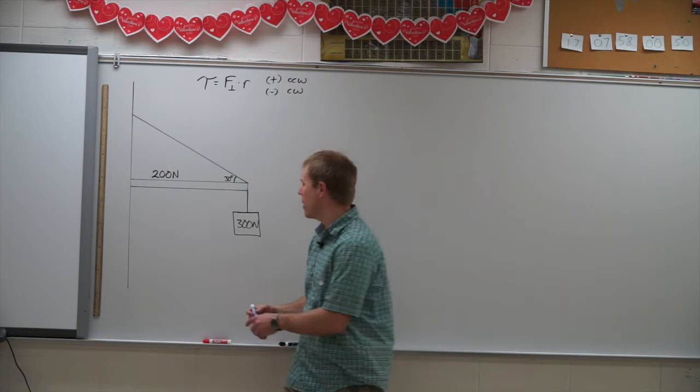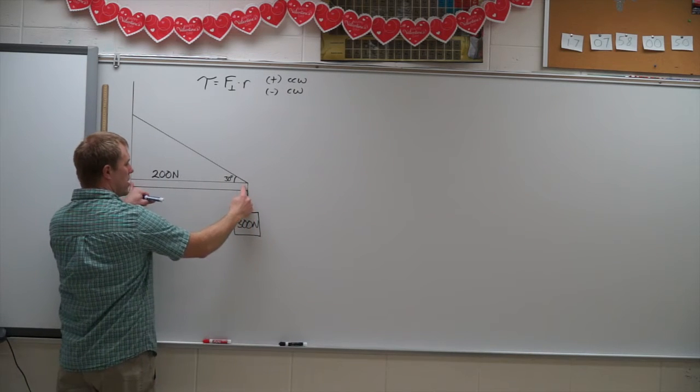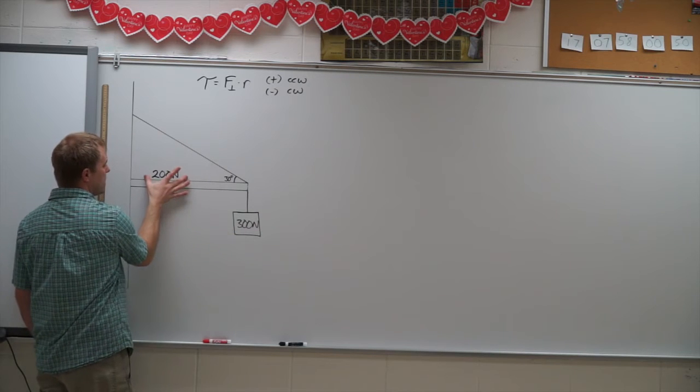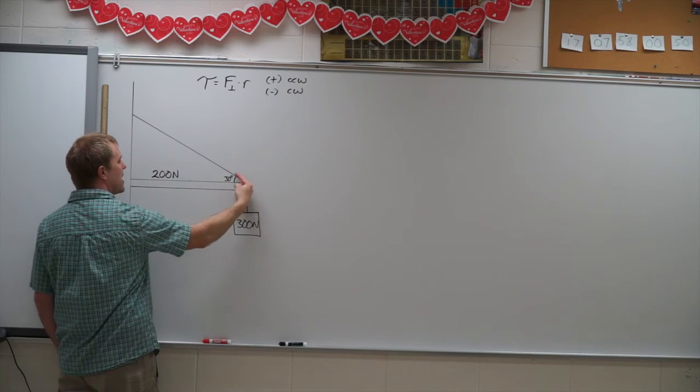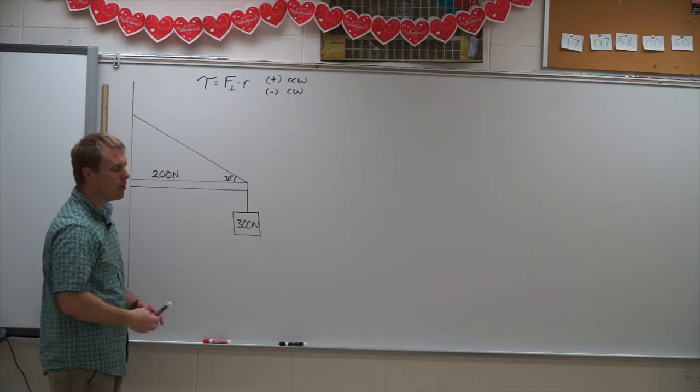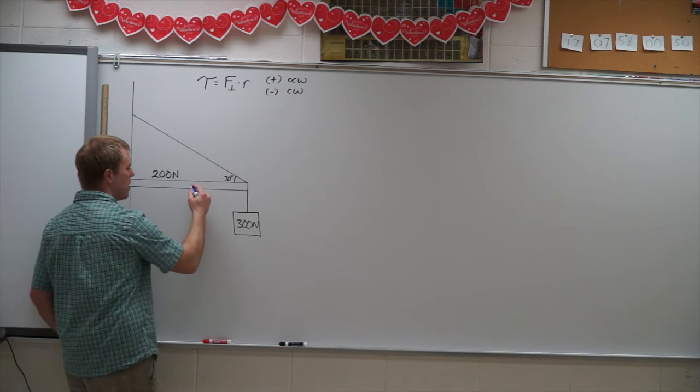So we need to draw a free body diagram for our bar here that is supporting a 300 Newton mass. It has a 200 Newton weight itself and the cable is angled at 30 degrees. And we want to figure out what is the tension in that cable.